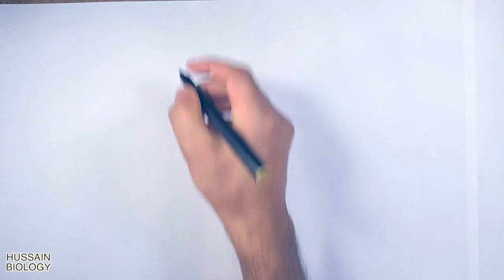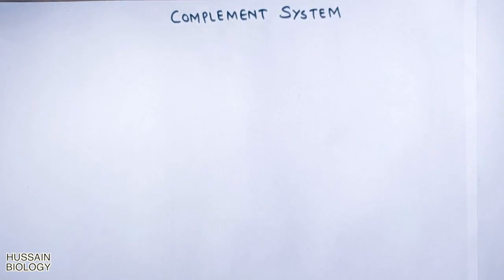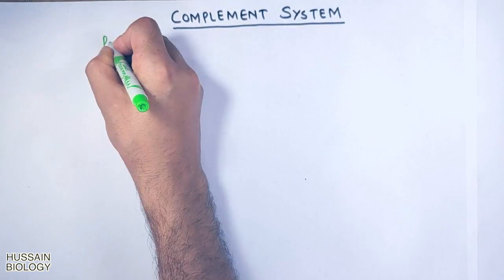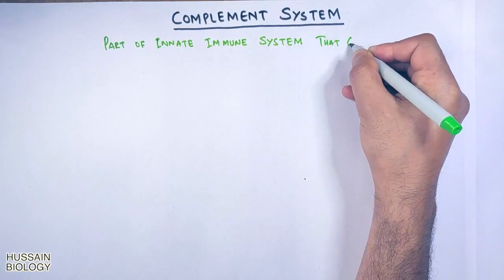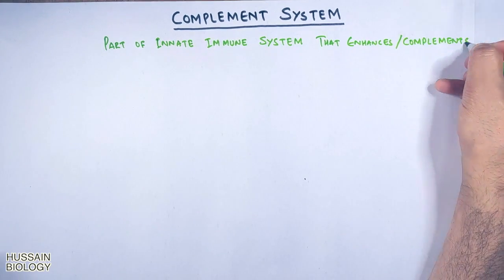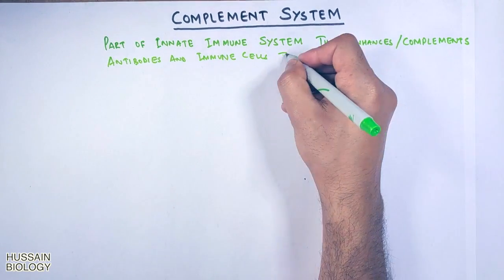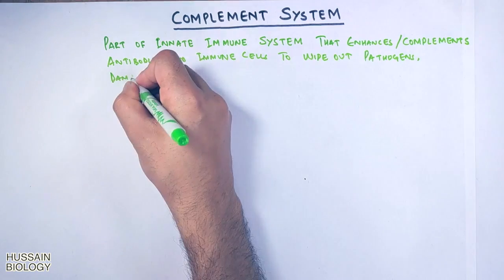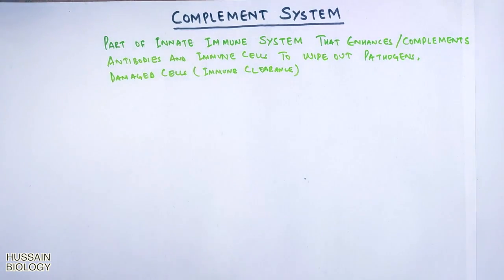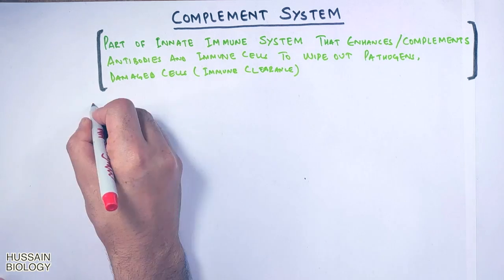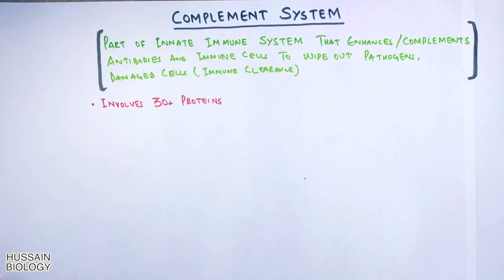In this video we will be discussing the complement system. The complement system is a part of innate immune system that enhances or complements the antibodies and immune cells to wipe out pathogens and damaged cells via immune clearance. The complement system involves 30 plus soluble and bound proteins present in the plasma.